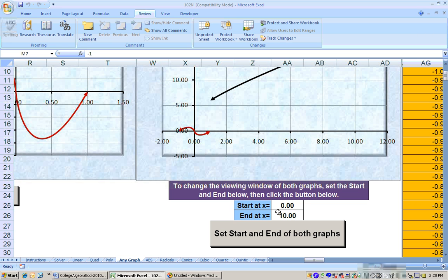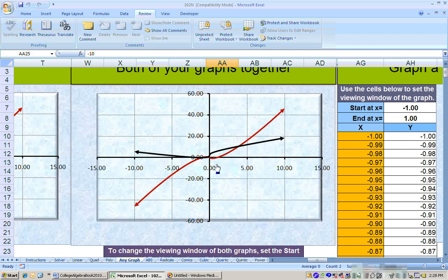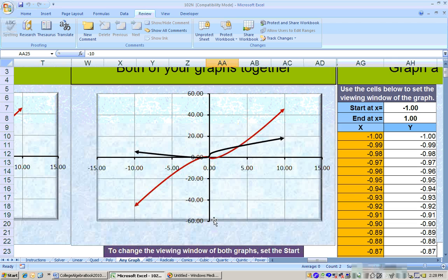I'll tell you what. Let's go ahead and graph them from, I don't know, negative 10 to 10 to start off with, just to see where they might hit. So give this a second to work. And it graphs both of the equation here over the same viewing window from negative 10 to 10.